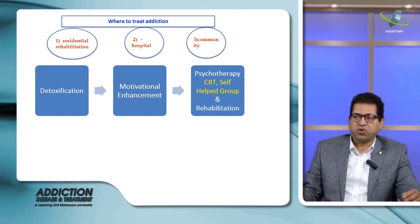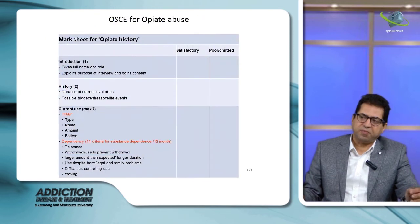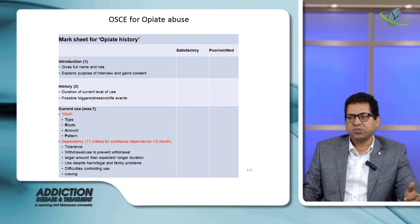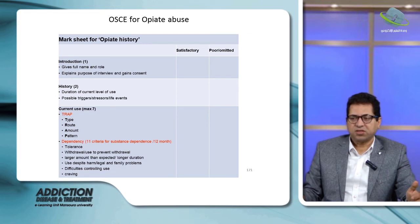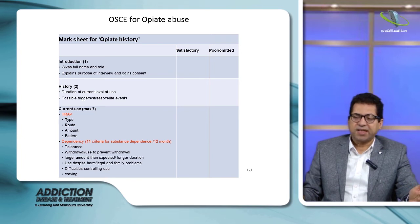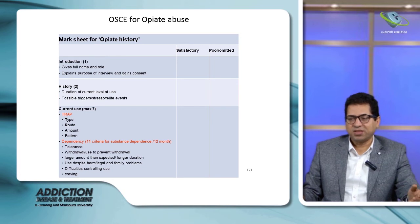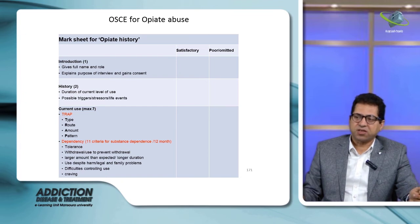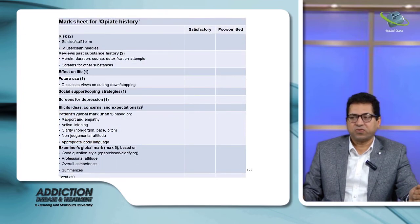This is an example of an OSCE sheet for exam purposes. Key steps include: first, introduce yourself and explain what you are doing; then take a history covering current use, types, routes, amount, and pattern; assess criteria for dependence over the past 12 months.